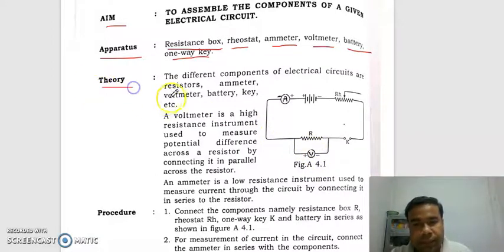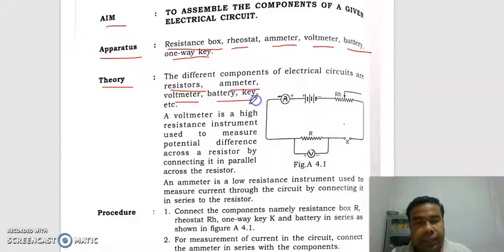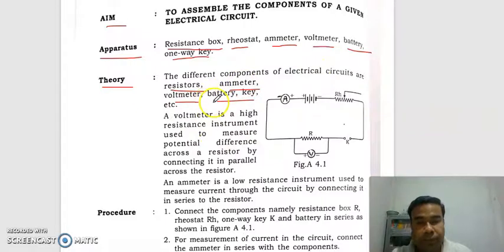Now you see the theory part. The different components of an electrical circuit are: rheostat, emitter, volumeter, battery, key, etc. So if you connect an electrical circuit, these are the requirements needed.